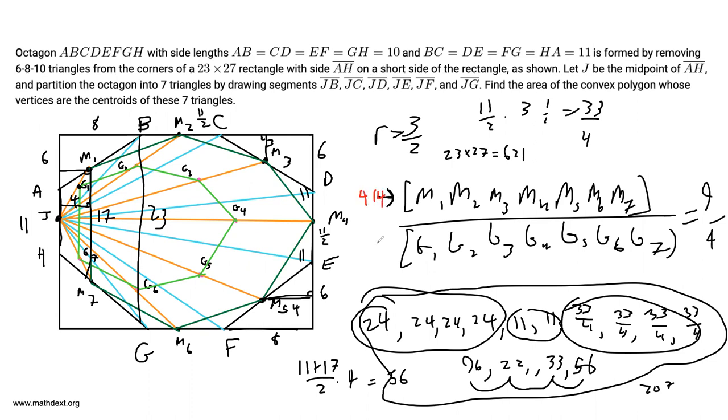So 414 over this thing is 9 over 4. So for this, you get that it's equal to 4 over 9 times 414, which if you do some simplification, you get 4 times 46, which is equal to 184. This is the area of the heptagon whose vertices are the centroids.